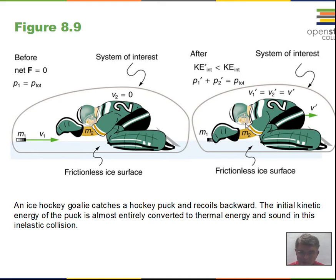It will be mass of the hockey puck plus mass of the goalie times the final velocity. So we've lost kinetic energy because the hockey puck does heat up locally in the pads of the goalie. We've lost kinetic energy.